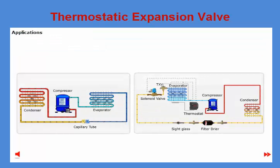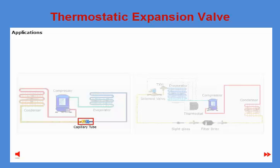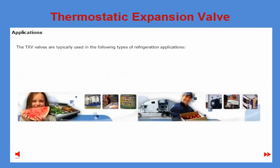A throttling device is necessary in all refrigeration applications. In the most basic systems with little demand for optimization, a capillary tube may be used; however, as soon as optimization of energy or function is necessary, a thermostatic expansion valve TXV is used. These valves are used in a wide range of refrigeration applications, divided into the following groups: commercial refrigeration, residential AC and heat pumps, commercial AC, and food retail.